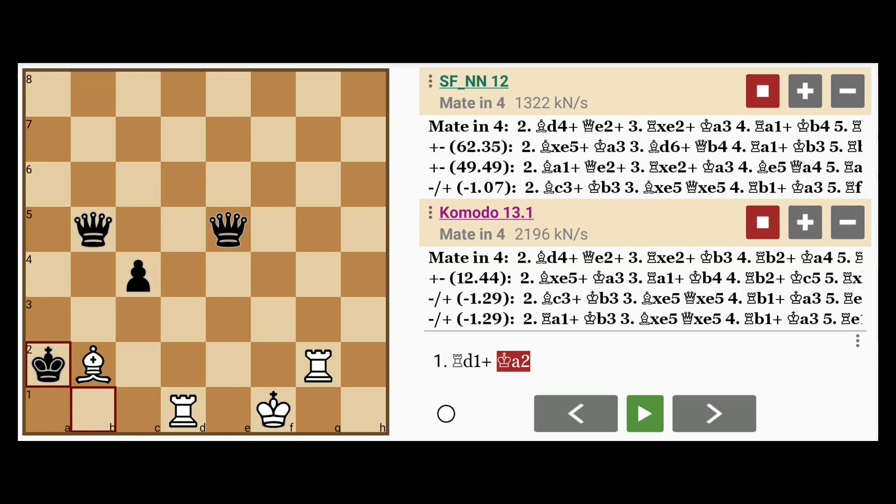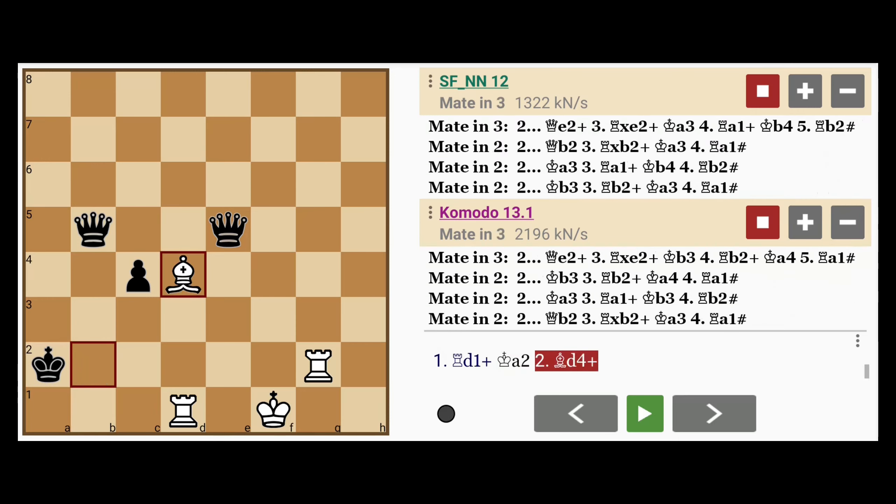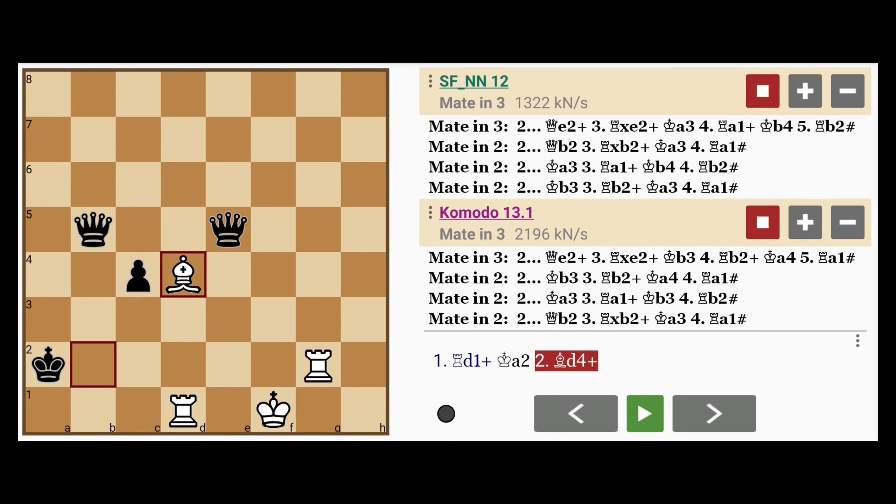And here, white plays bishop to d4 discovered check, one step short of capturing the queen on e5.